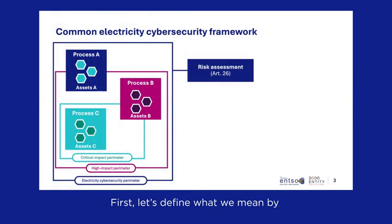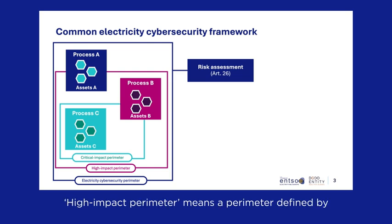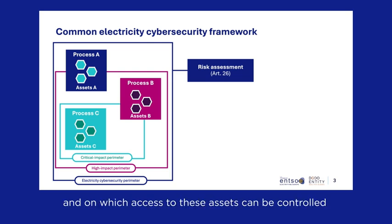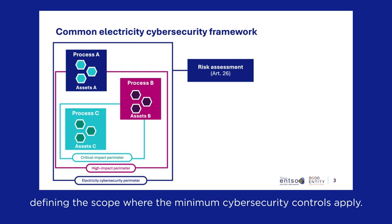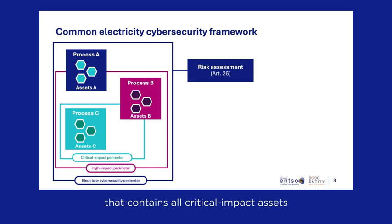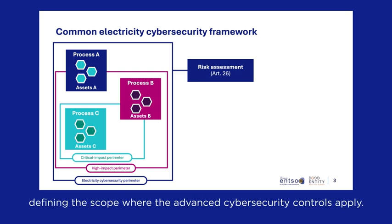Let's define what we mean by high-impact and critical-impact perimeters. High-impact perimeter means a perimeter defined by any entity listed in Article 2, Paragraph 1, that contains all high-impact assets and on which access to these assets can be controlled, defining the scope where the minimum cybersecurity controls apply. Critical-impact perimeter means a perimeter defined by an entity referred to in Article 2, Paragraph 1, that contains all critical-impact assets and on which access to these assets can be controlled, defining the scope where the advanced cybersecurity controls apply.